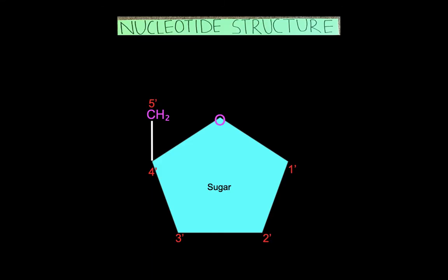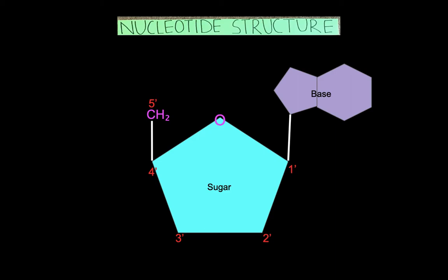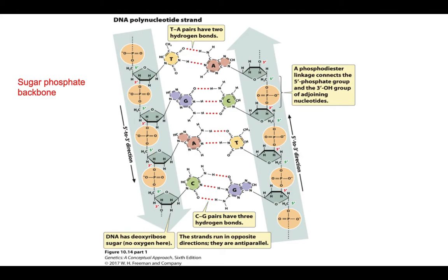When we put it all together, we have a nucleotide. The 1' carbon of the sugar attaches to the base. The 5' carbon has the phosphate group and the 3' carbon bonds to the next 5' phosphate of the next nucleotide. Now let's see how the nucleotides polymerize.